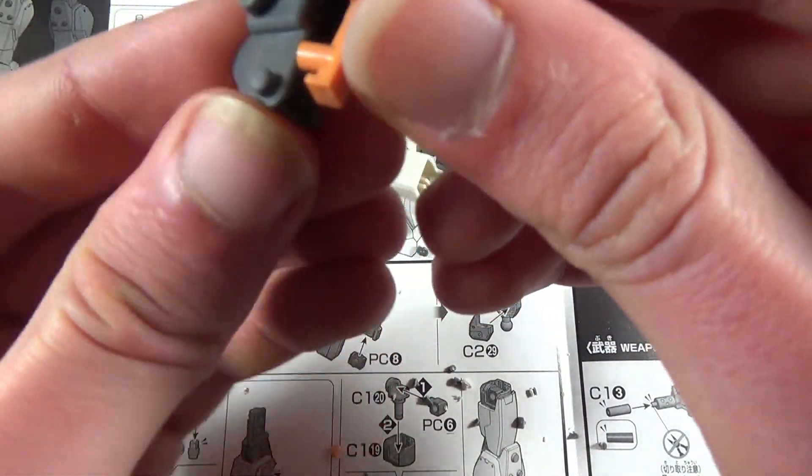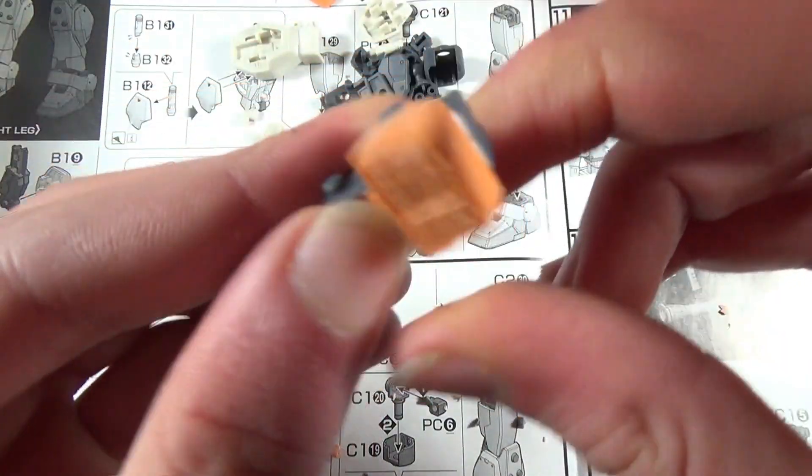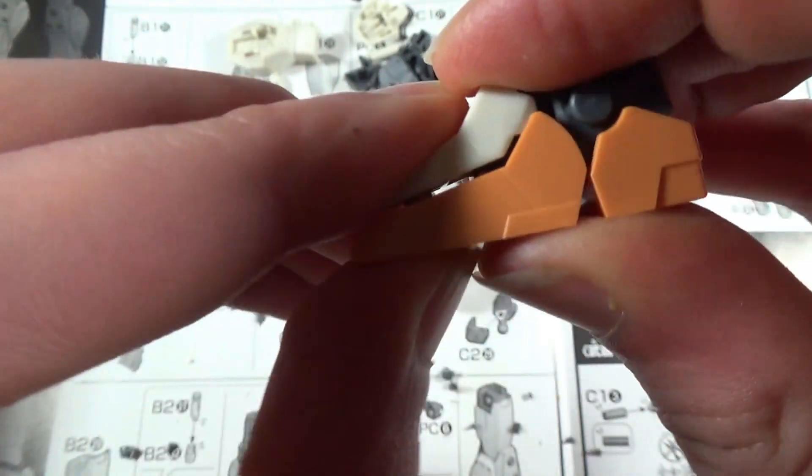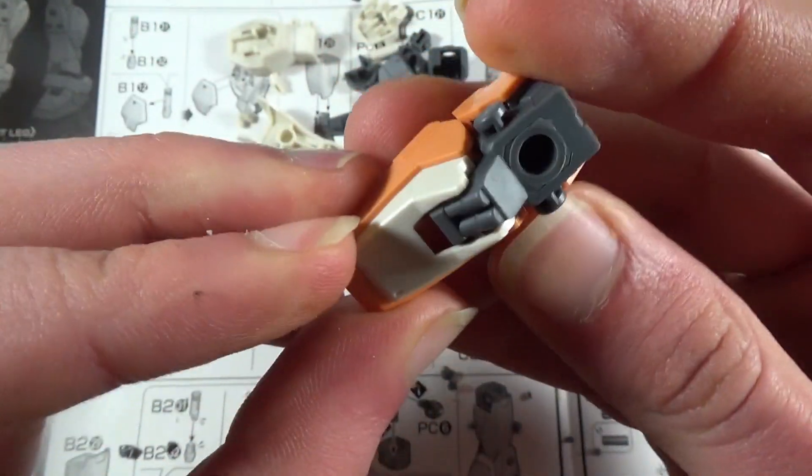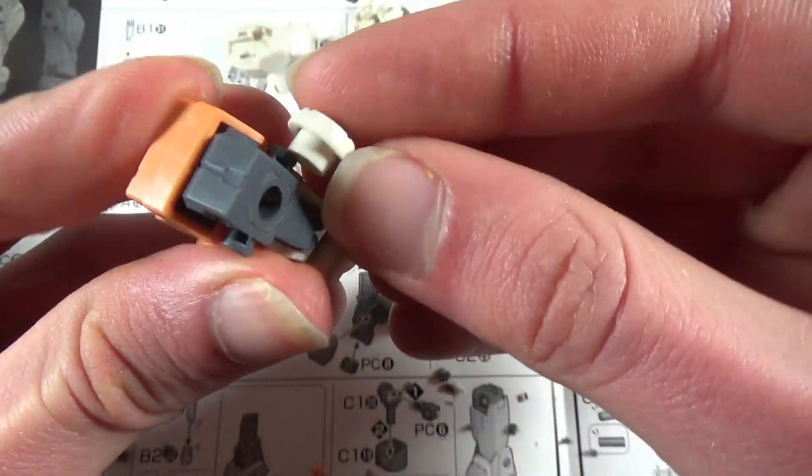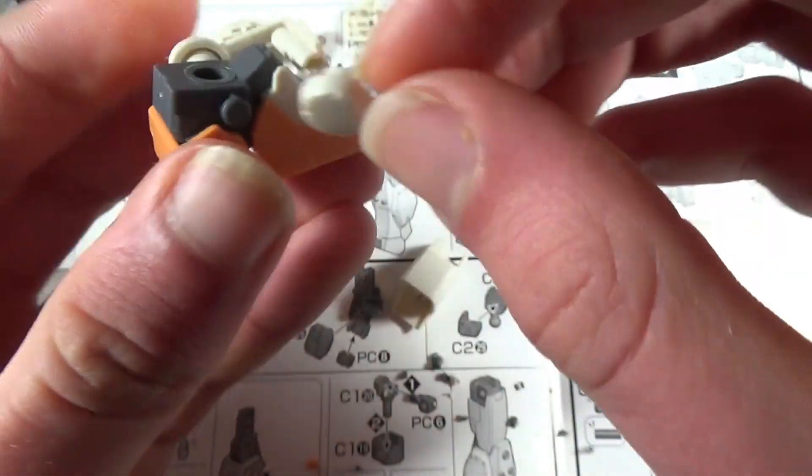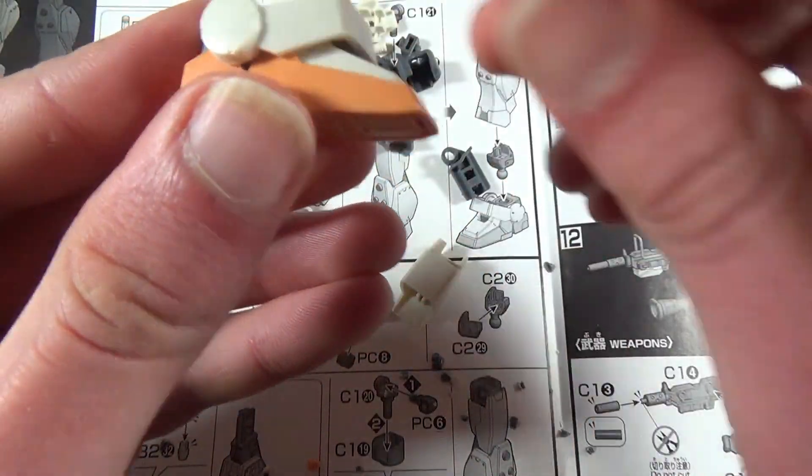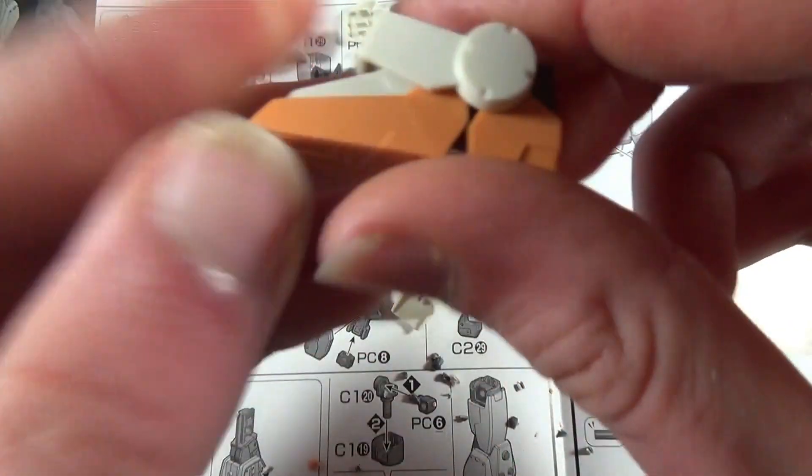And then this goes over the back of it just like that. So we've got the heel right here. Then you add the toes, and you cap it off with the top of the foot, and the foot is almost done. We just need to add these little ankle guards, which just clip around here.